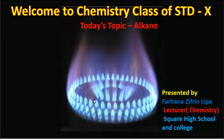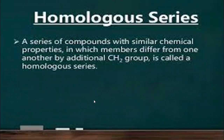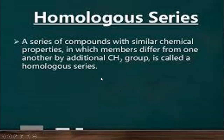So let's start the class. First, homologous series. A series of organic compounds with similar chemical properties in which each member differs from one another by an additional methylene group is called homologous series. That means homologous series is actually a group of organic compounds where their chemical properties are same, their constituent elements are same, and between two consecutive members there is a difference of only a CH₂ group. This is called the methylene group.